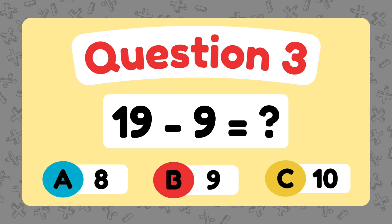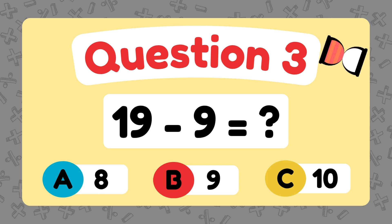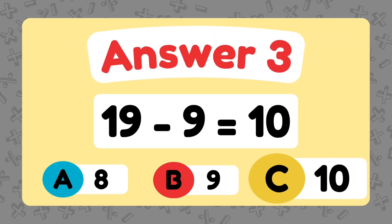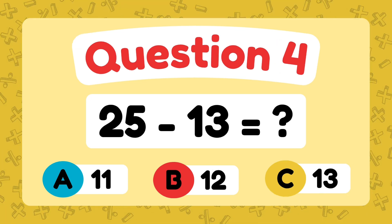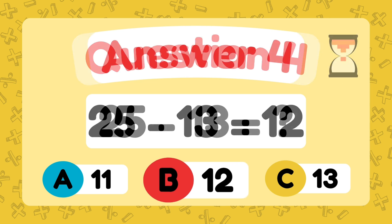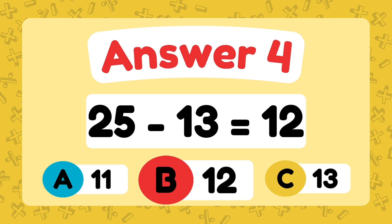What is 19 minus 9? The answer is 10. What is 25 minus 13? The answer is 12.